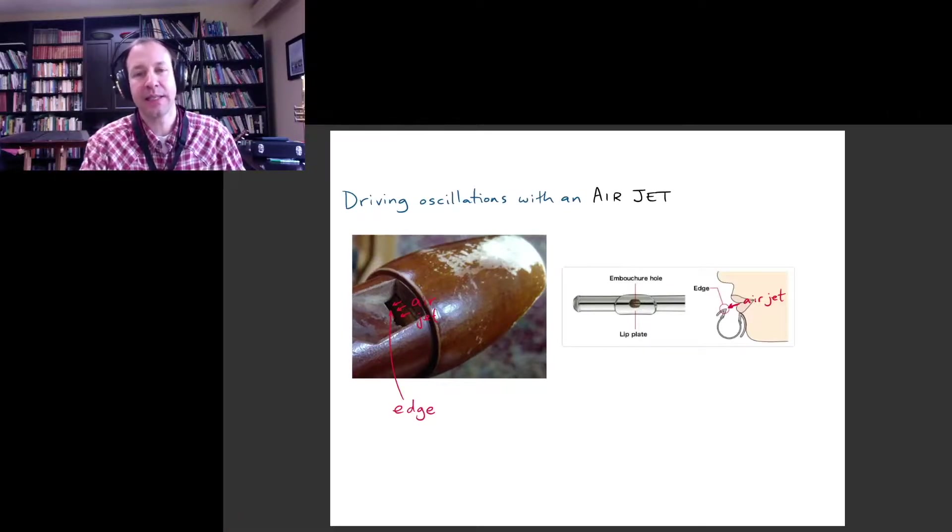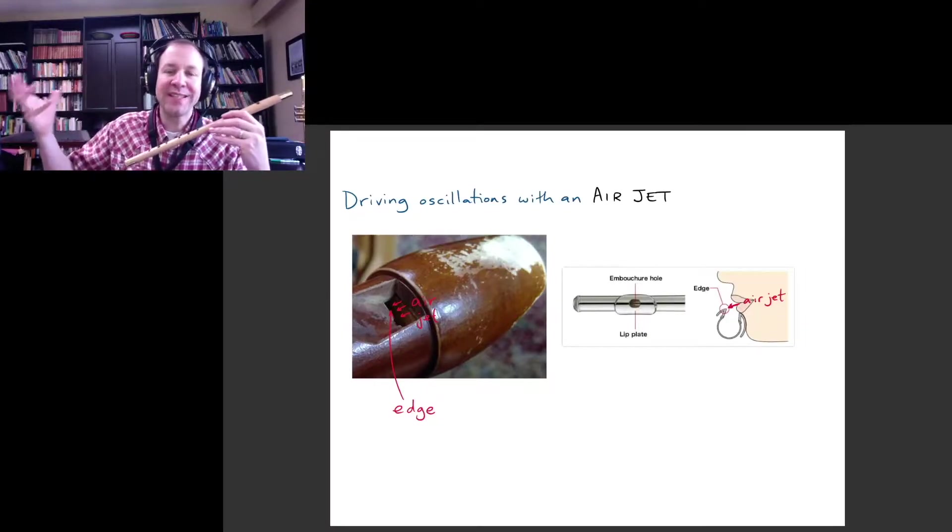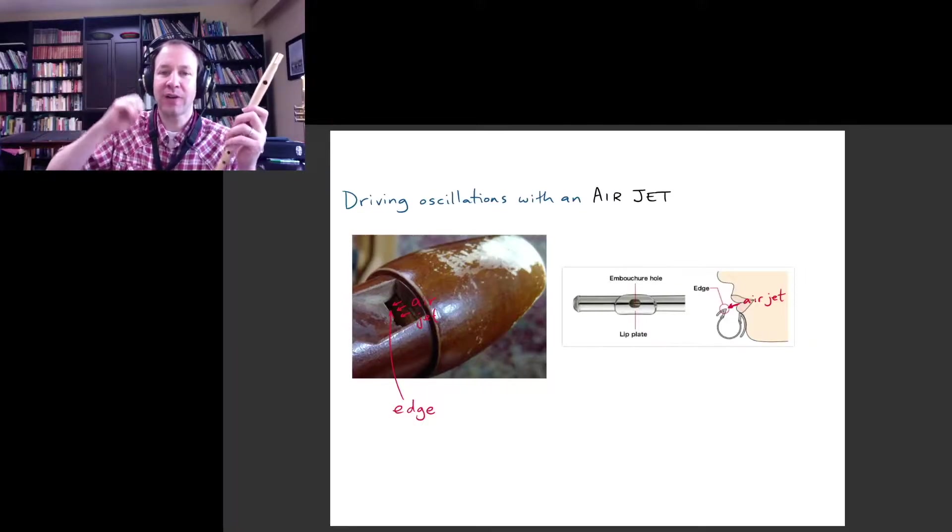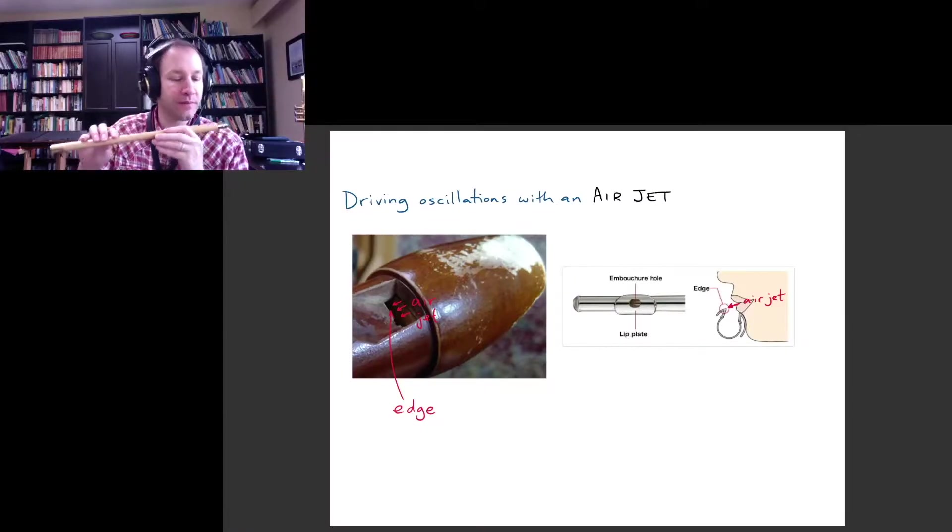You're blowing directly into a hole in the instrument. And in this case, the physics that drives the oscillation has to do with the air jet that you produce with your lips. Okay, so there's this jet of air when you're playing the flute.